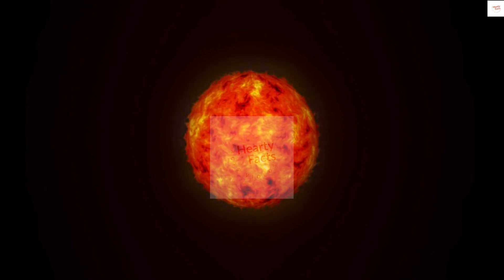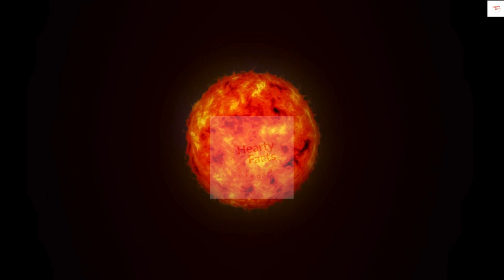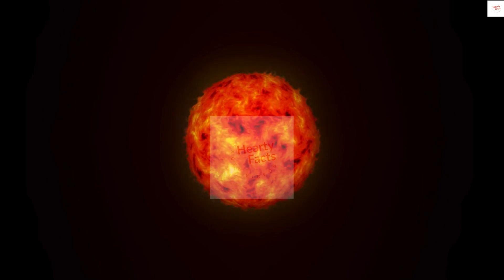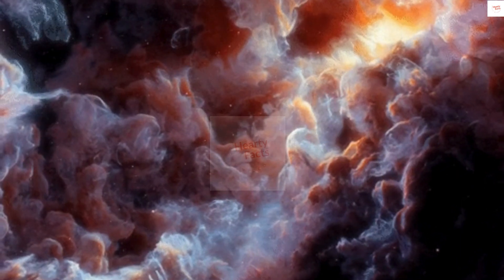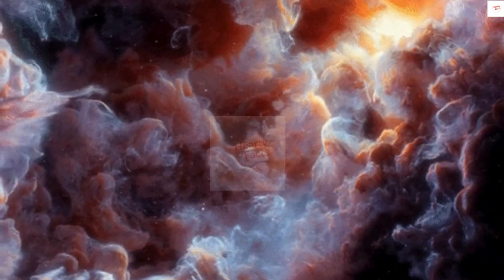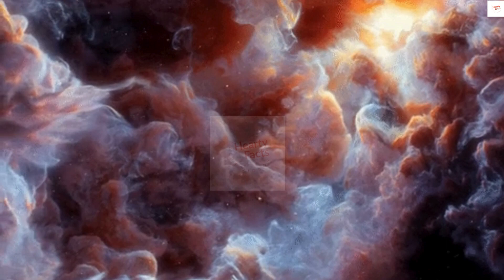The sun, our radiant celestial parent, was born from the cosmic nursery that predates our planet. Picture a swirling nebula, a vast and vibrant cloud of cosmic dust and gas. This is where our sun's story begins.